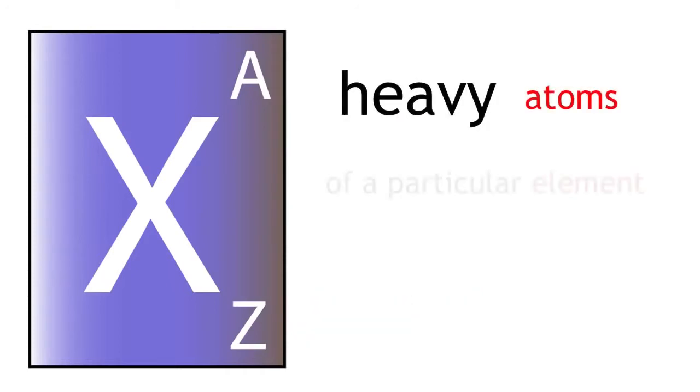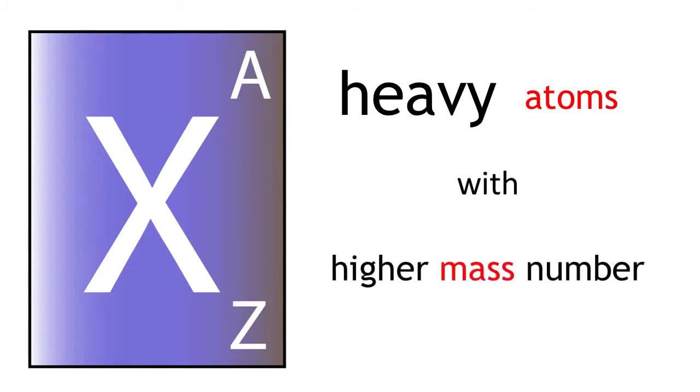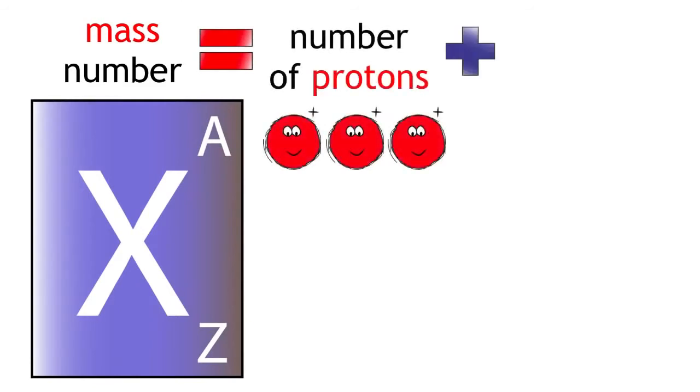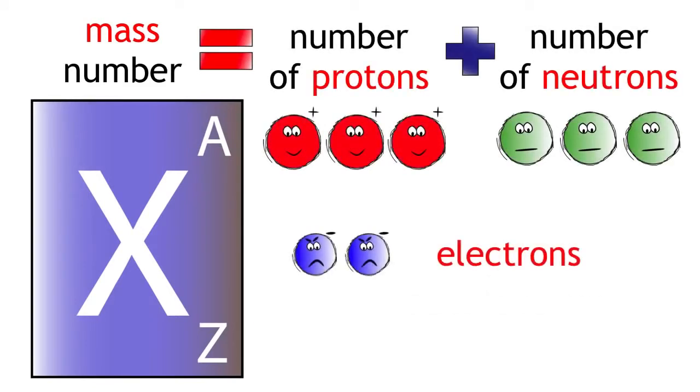But sometimes you can find heavy atoms of a particular element. These atoms have a higher mass number. The mass number is equal to the number of protons plus the number of neutrons. We can ignore the electrons as their mass is so tiny.